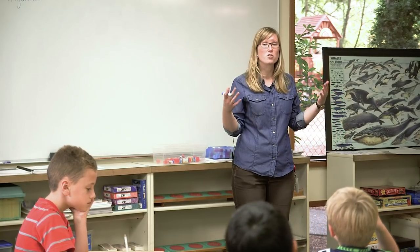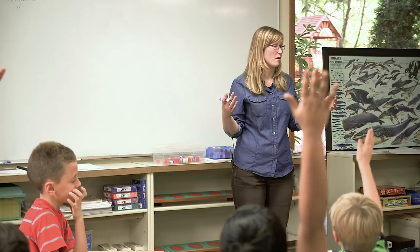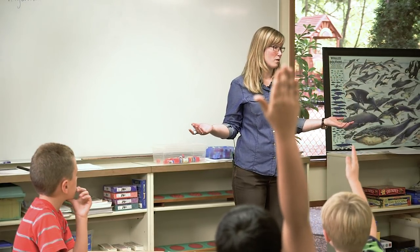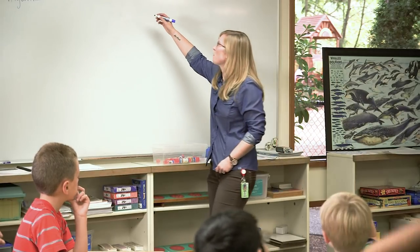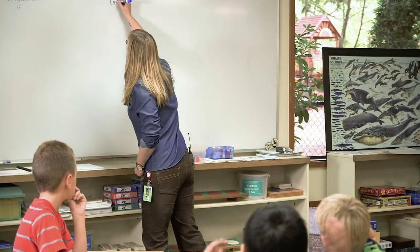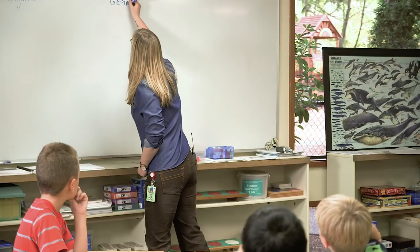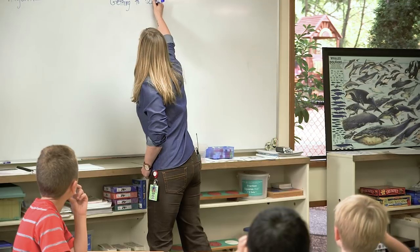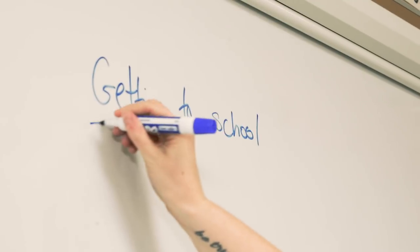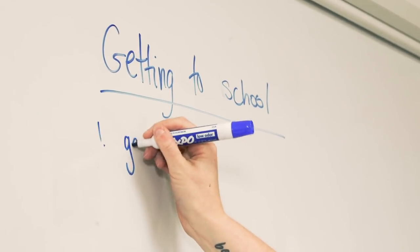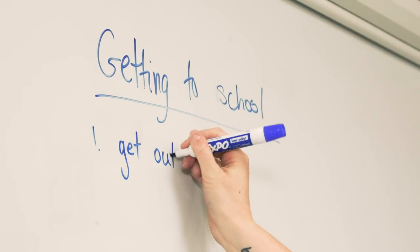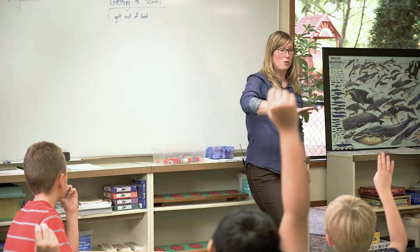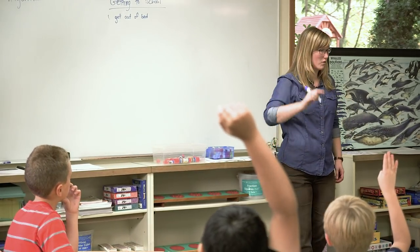Who can start me off with a list? Let's do this together as a class. Let's make a list of steps we have to do to get to school in the morning. Arjun, will you start us? What's going to be step number one? Wake up and get out of bed. Okay, let's title this 'Getting to School.' Number one is going to say: get out of bed. Do you guys all agree with that? You have to go from your horizontal position to vertical to get out of bed.